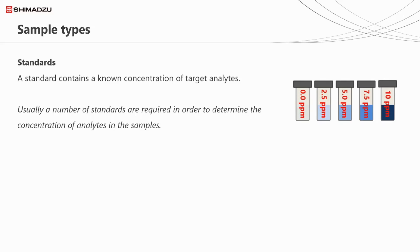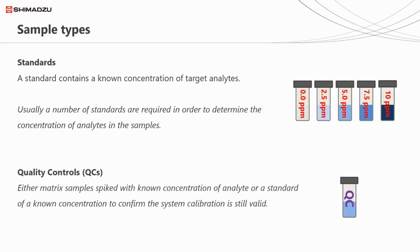Standards contain a known concentration of a target compound or compounds. If we want to calculate the concentration of analytes in our unknowns, we'll likely need a number of standards, each at different concentrations. In many regulated environments, you might also come across quality control or QC samples. These also have a known concentration in them. The difference with QCs is that we analyse them as if we don't know the amount, and then compare the reported concentration with the known concentration to determine whether the GC system is reporting within specification.